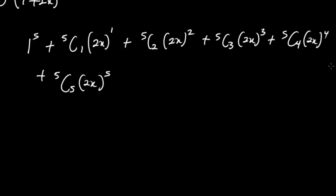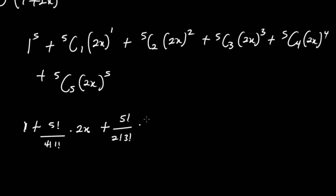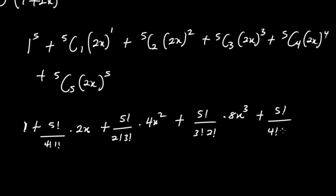Now evaluating each combination: 5C1 = 5!/4!·1! = 5, so we have 5 × 2x = 10x. 5C2 = 5!/(2!·3!) = 10, multiplied by (2x)² = 4x², giving 40x². 5C3 = 5!/(3!·2!) = 10, multiplied by (2x)³ = 8x³, giving 80x³. 5C4 = 5!/(4!·1!) = 5, multiplied by (2x)⁴ = 16x⁴, giving 80x⁴. 5C5 = 5!/0!·5! = 1, multiplied by (2x)⁵ = 32x⁵.